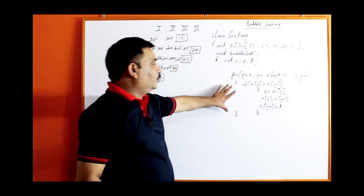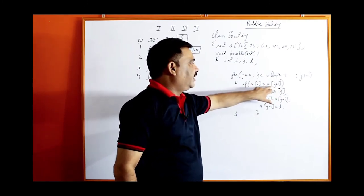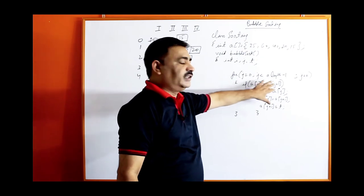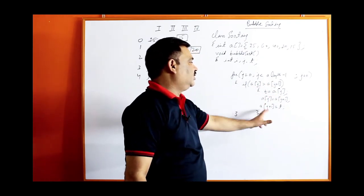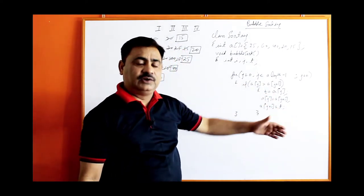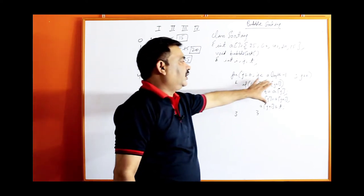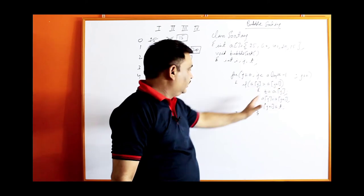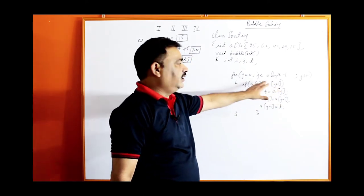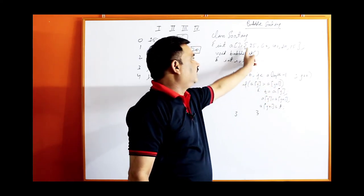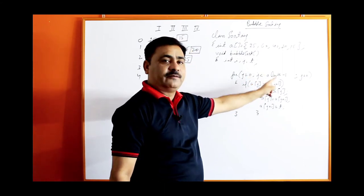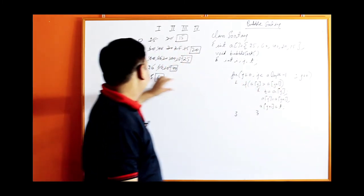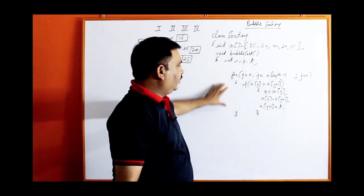First try to understand this loop. When J is 0, A[0] will be compared with A[1], the next adjacent value. If the first one is greater than the second, then only it will be swapped. Next time J will be 1, then A[1] will be compared with A[2]. Next time A[2] with A[3], and A[3] with A[4]. The loop runs while J is less than A.length minus 1. Length is 5, so 5 minus 1 is 4, meaning J goes up to 3 — so 4 comparisons total.